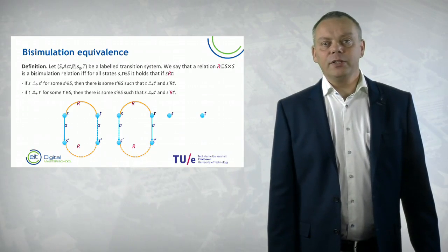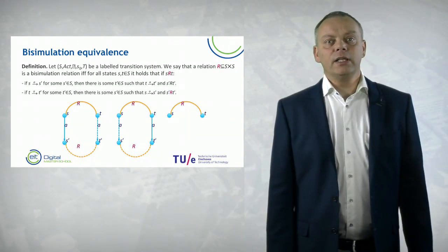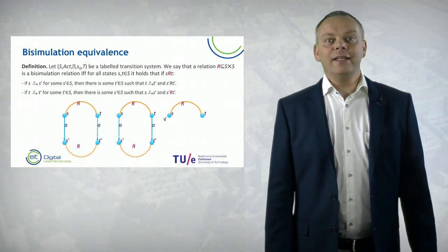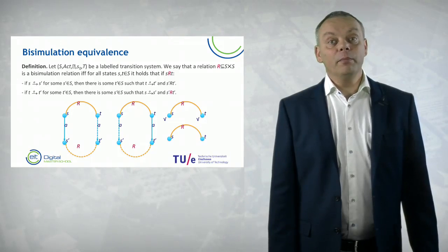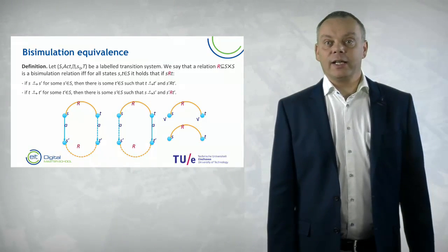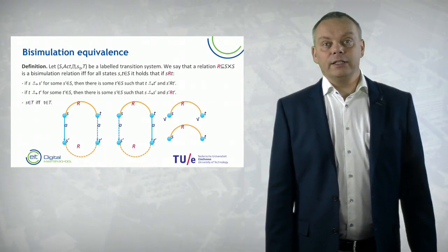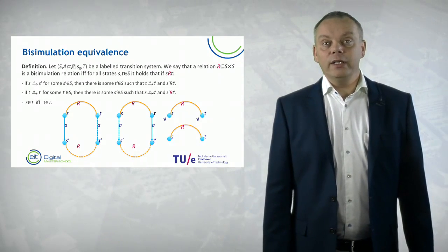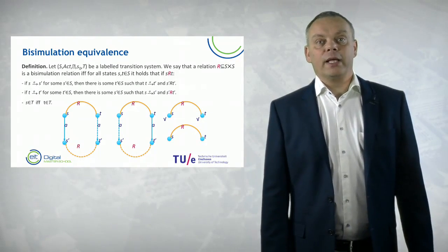We also have to deal with termination. Suppose we have two states S and T that are related. If one can terminate, indicated by a tick symbol, then the other side should also terminate. If one side cannot terminate, then the other side should also not be able to terminate. This is expressed as: if S is an element of the terminating states, then and only then T should also be a member of the terminating states.